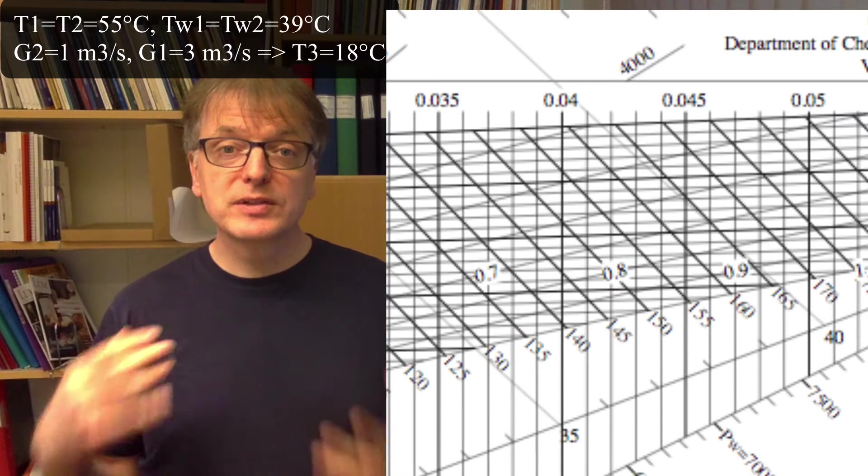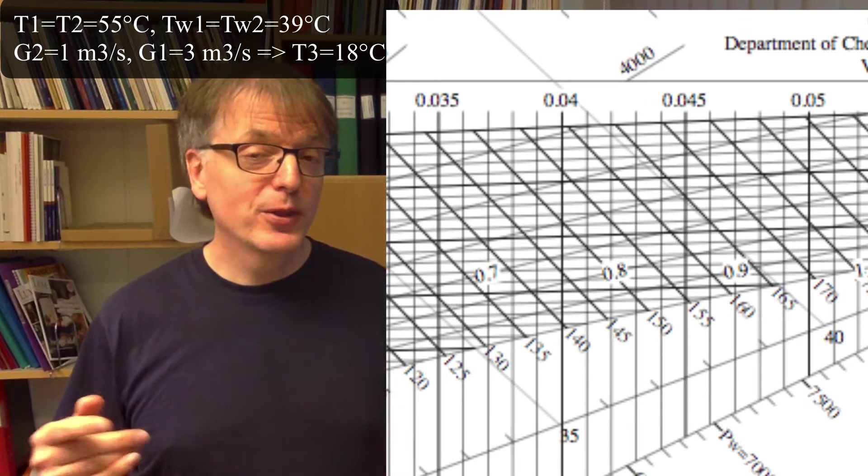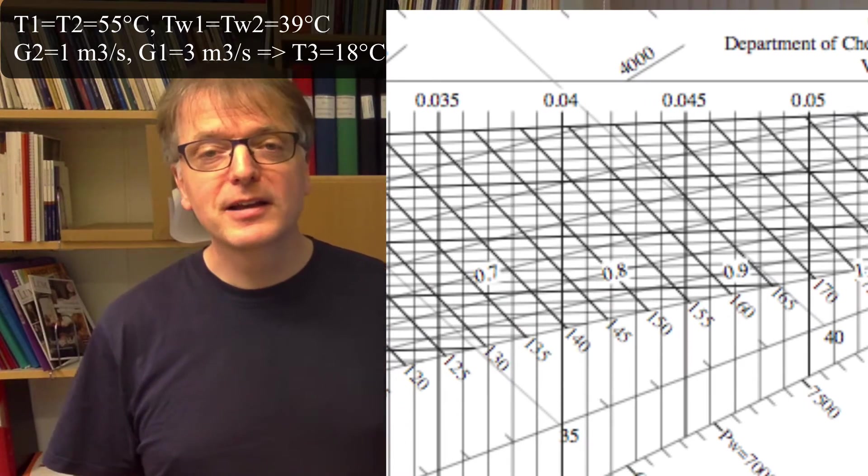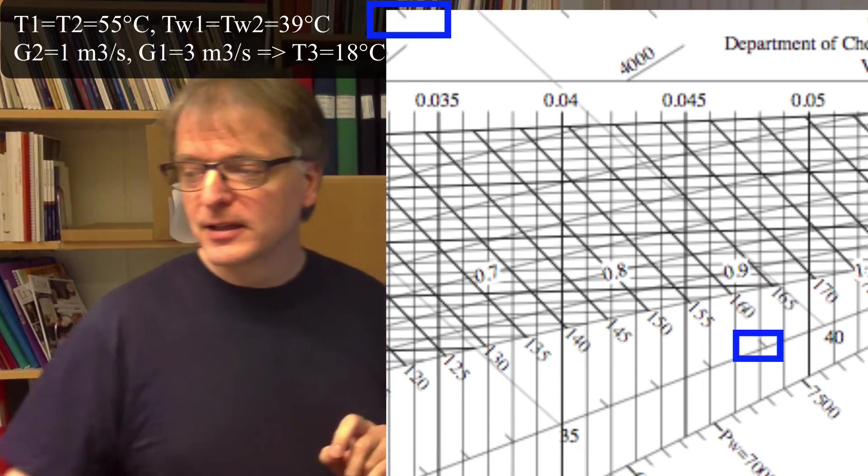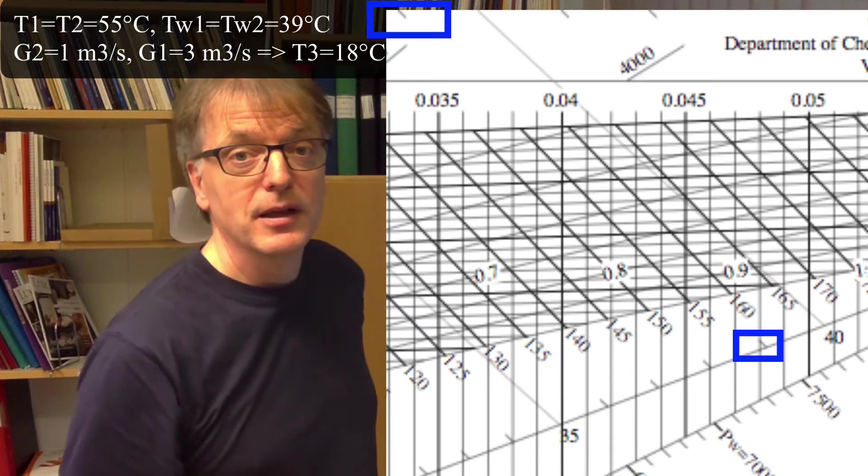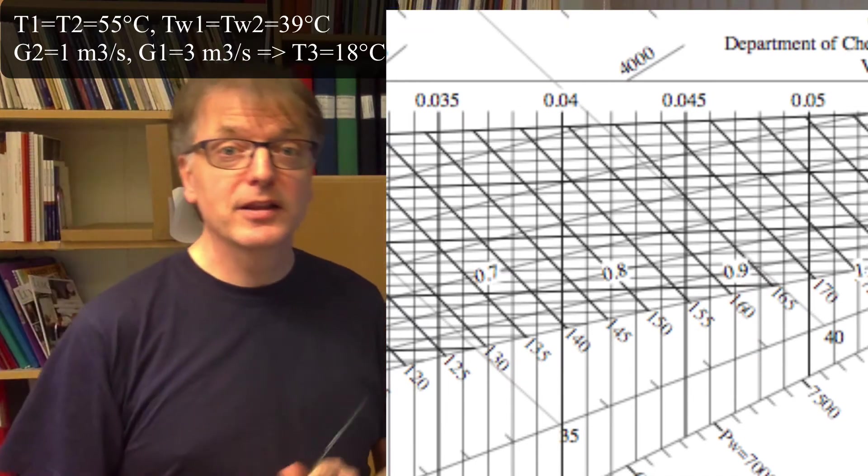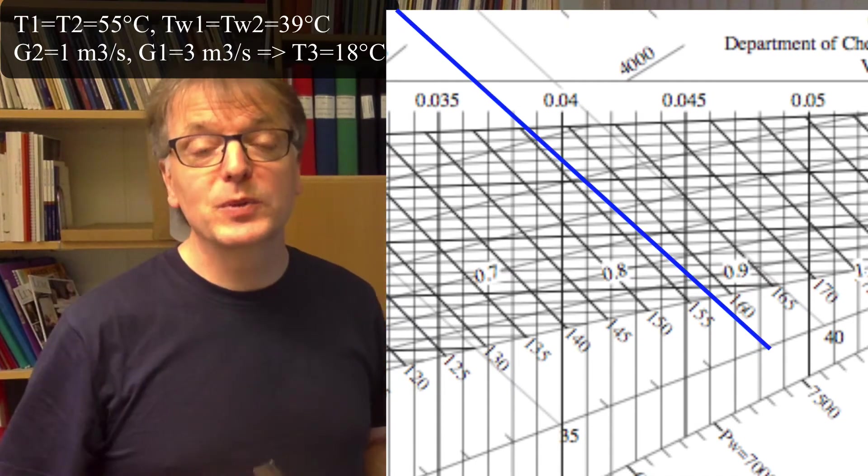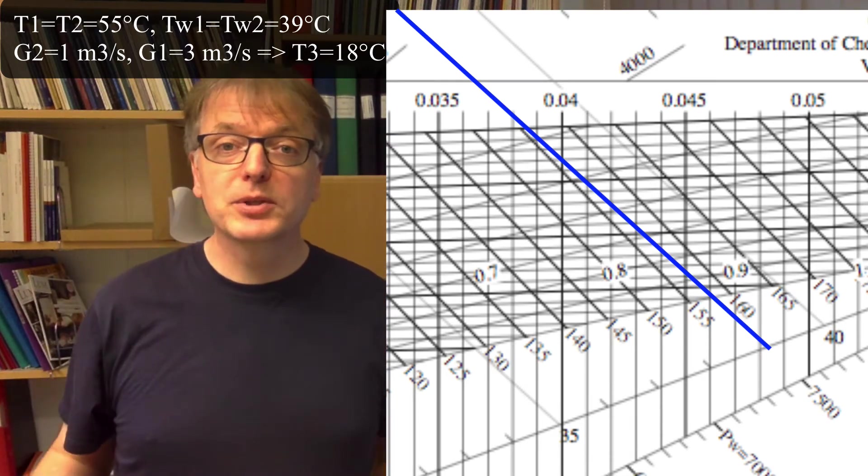If you use the same diagram as I do, there is no 39 degrees wet temperature line, but there are some ticks that you can use. So there is a help tick down there and a help tick up there. You pick up your ruler and then you make a line between the two, and that's your 39 degrees wet temperature.